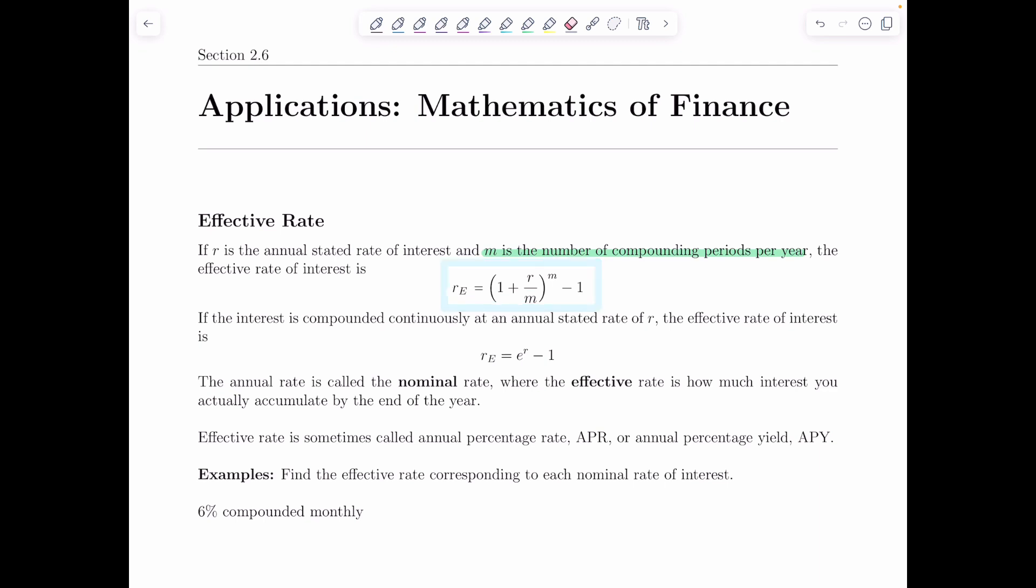What the effective rate tells you is what that compound interest basically is equivalent to had you been given just a simple interest rate that was only compounded once a year. It allows you to compare different interest rates that might be at different levels and also compounded different number of times a year to compare which one is giving you a better yield or worse, depending on what you're looking at.